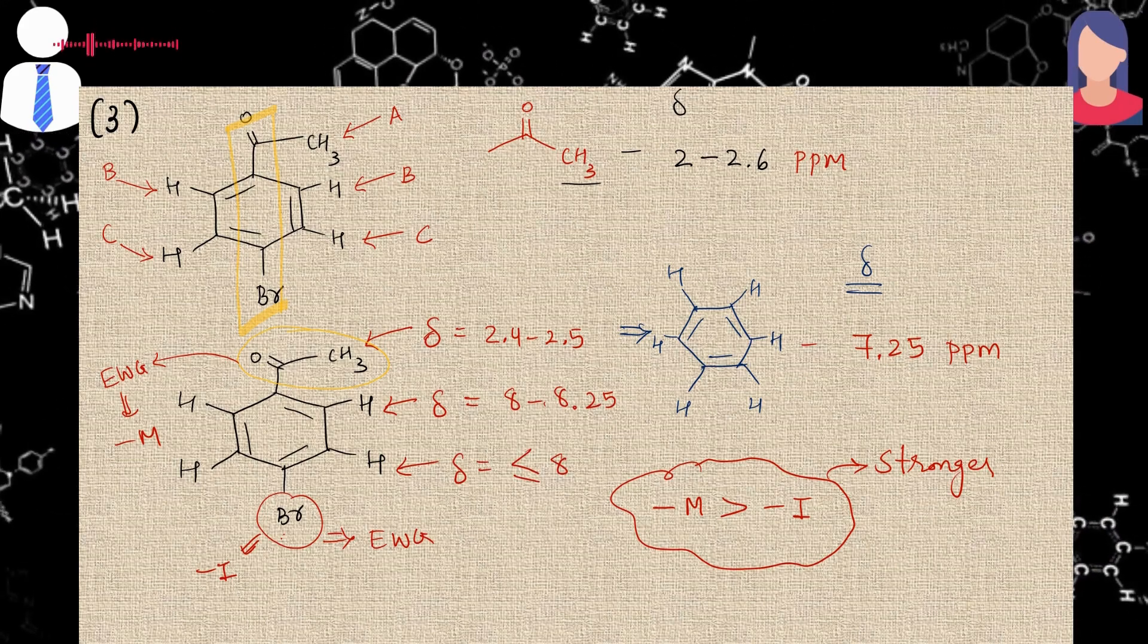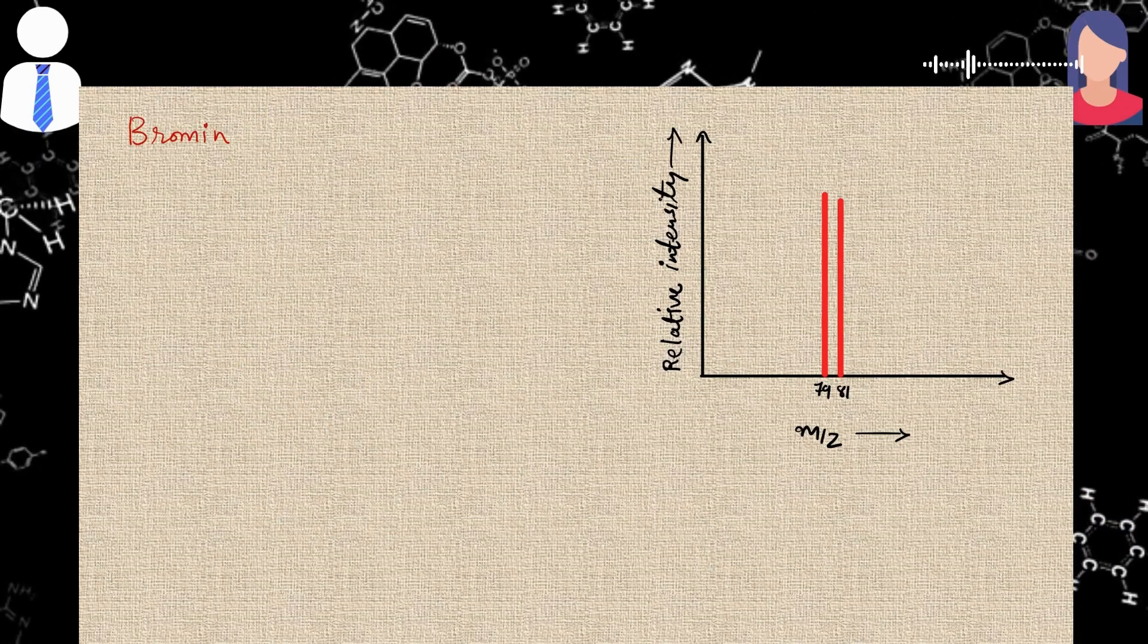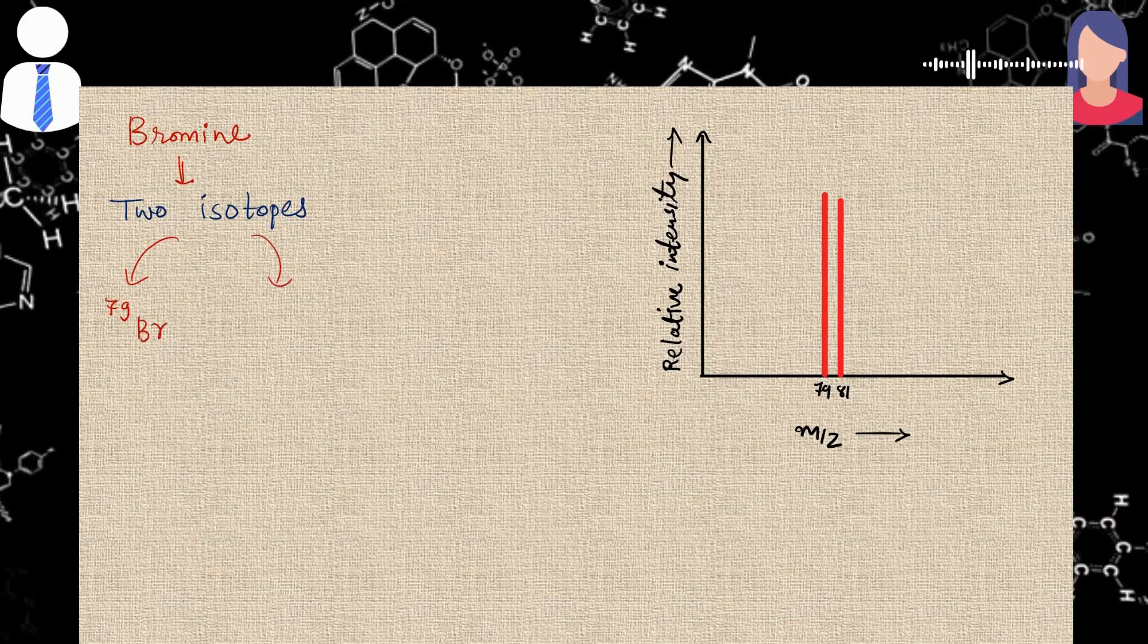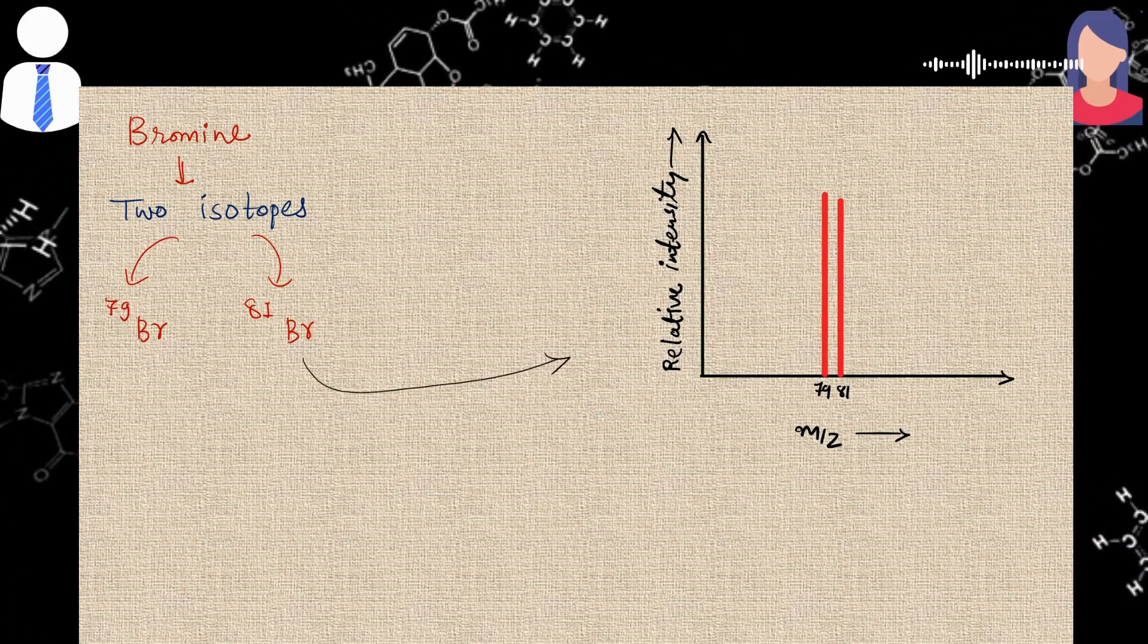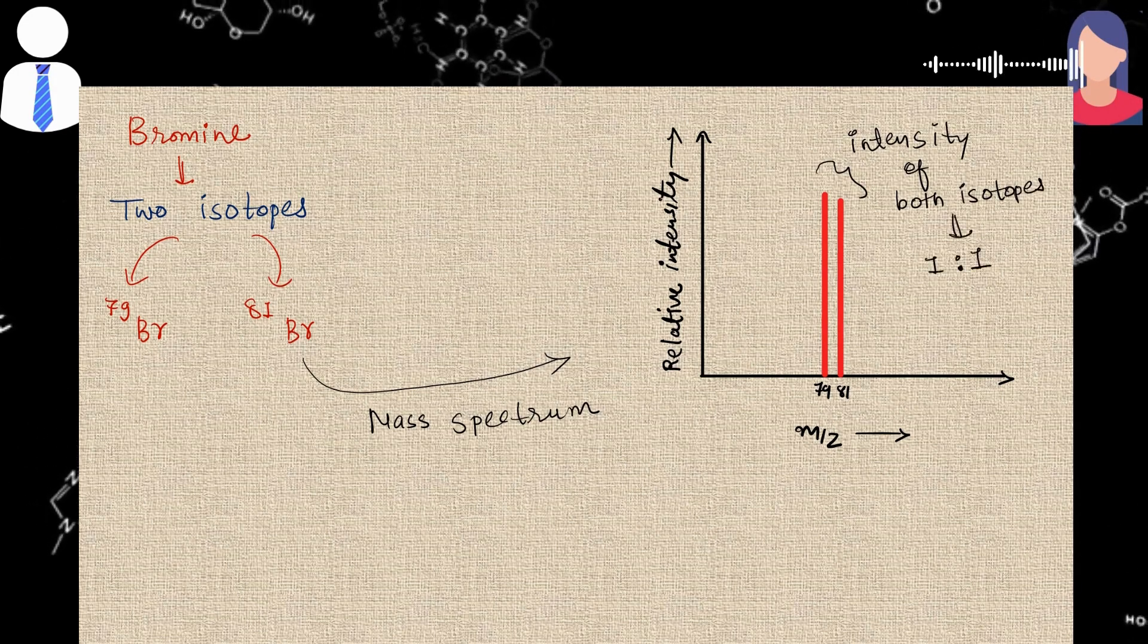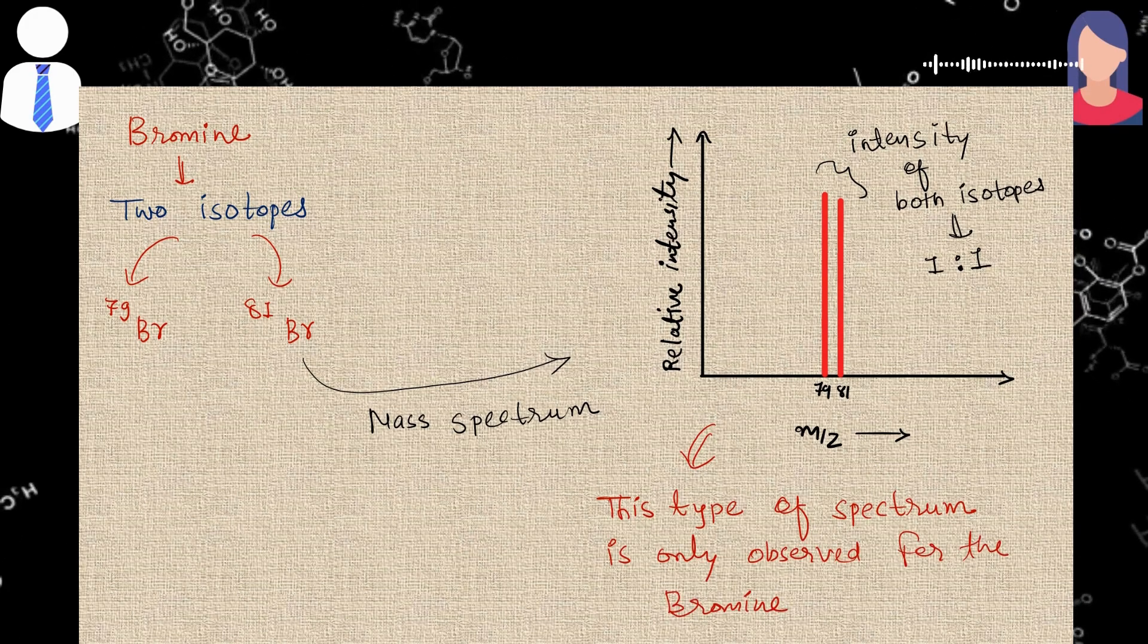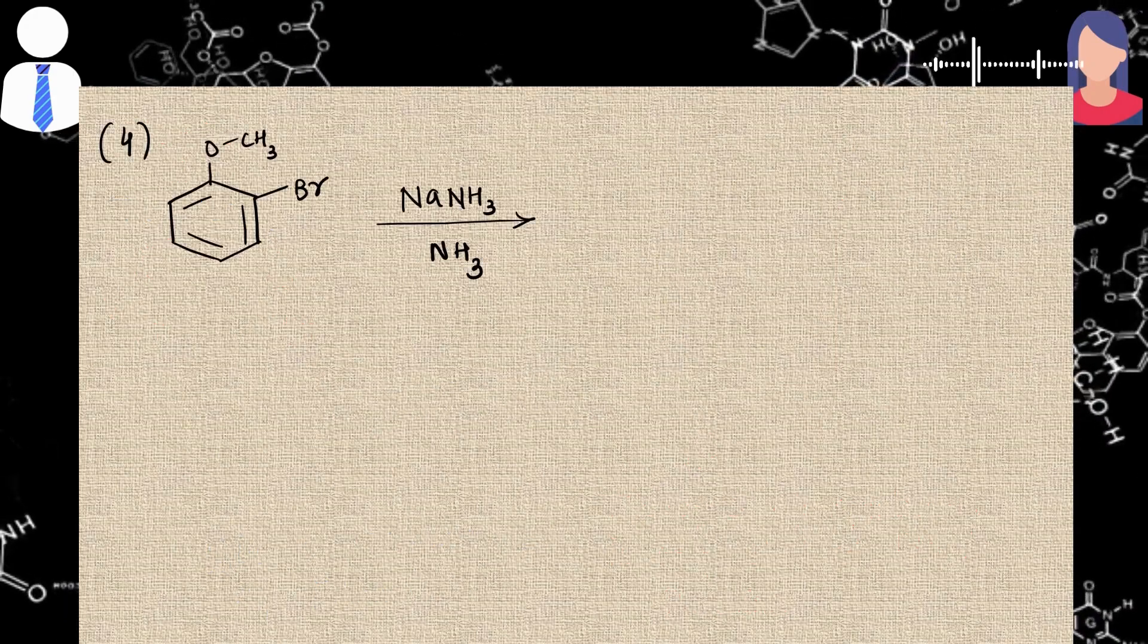Then he asked me, can you identify the presence of the bromine group separately. I said yes sir, with the help of mass spectrometry we can identify the presence of bromine. Then he said how. So I replied that sir, bromine has 2 isotopes: 79 Br and 81 Br. And both of these isotopes have approximately equal mass abundance. So when we record the mass spectra of this compound, then it gives 2 peaks of intensity of 1:1, which shows the presence of these 2 isotopes. And this thing is only shown by the bromine. So with the help of these isotopic peaks in the mass spectra, we can identify the presence of the bromine group.